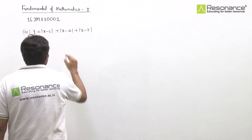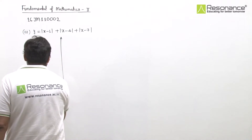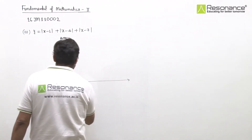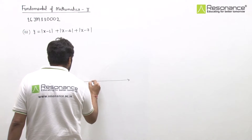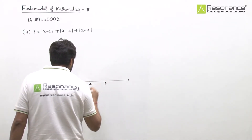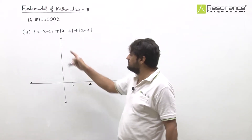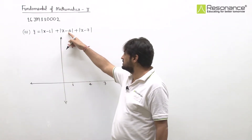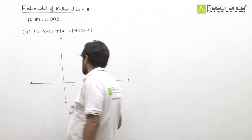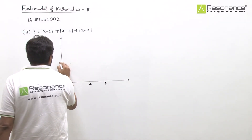The graph turns at x = 1, x = 4, and x = 7. Checking values: at x = 1, the first term is 0, the second gives 3, the third gives 6 — total value is 9. So at x = 1, the value is 9.